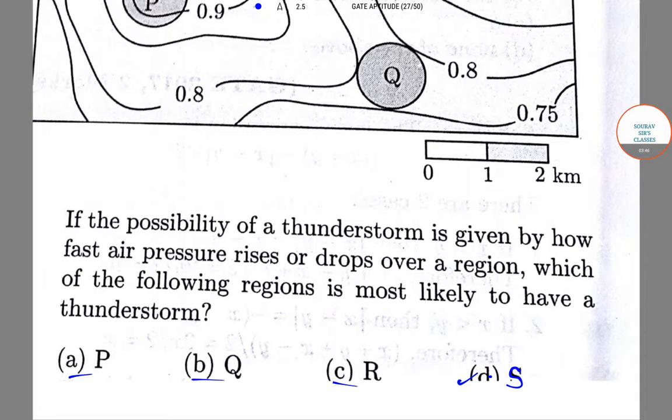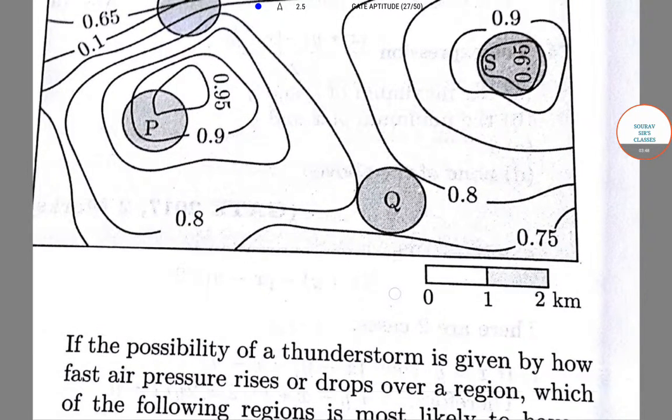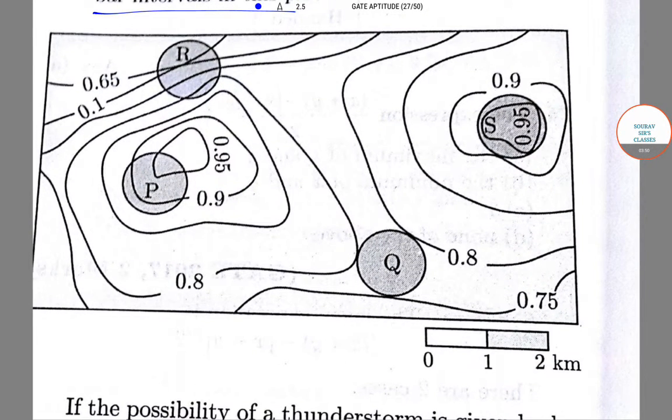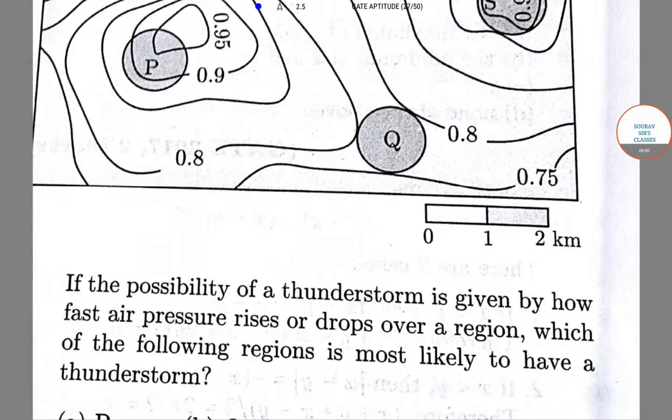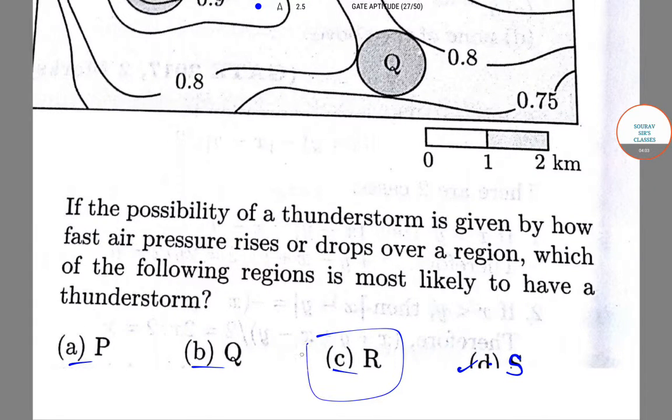Now, air pressure drop is maximum in the region R, as can be seen from the contour lines. Therefore, option C gives us the correct answer.